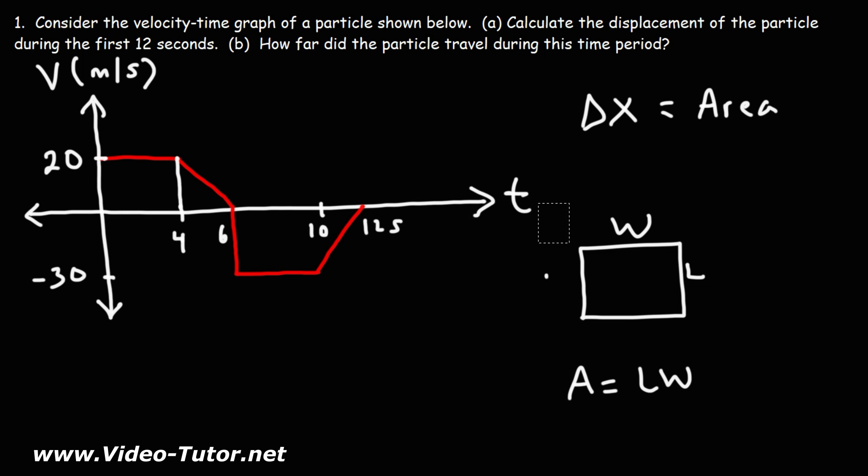So let's go ahead and calculate the area for each section. What I like to do is break up the problem into rectangles and triangles. Let's calculate the area of this rectangle. It's going to be 20 times 4, which is 80.